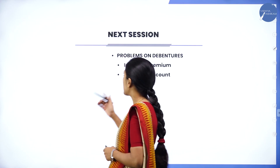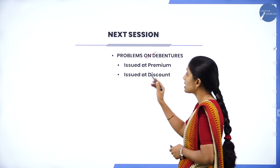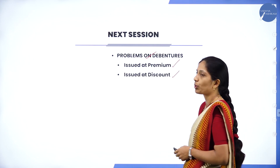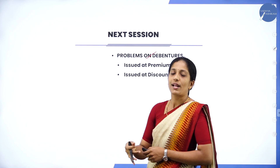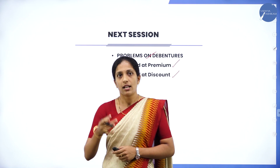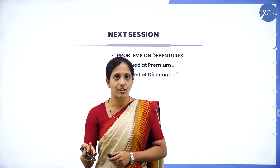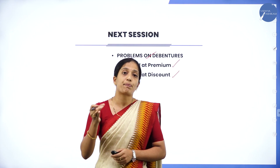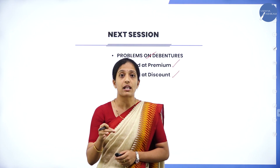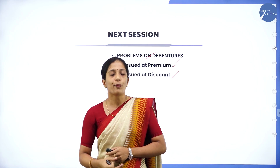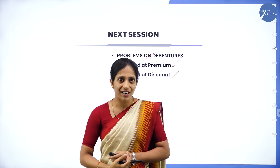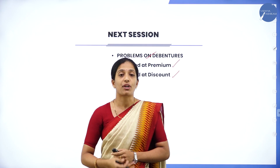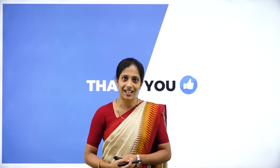In the next session we will discuss problems on debentures issued at premium and at discount. Today's session covered journal entries under different payment situations — one, two, or more than two installments — and two problems on debentures issued at par requiring six journal entries. Hope you have understood. See you in the next session with a new concept. Till then, take care. Thank you.